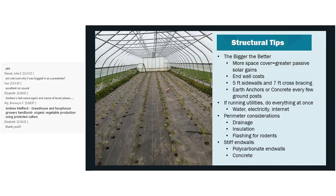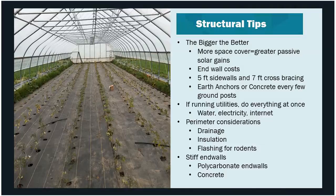The first structural tip: bigger is better. Larger structures provide greater passive solar gains, more microclimate creation capacity, and lower relative end wall costs. For example, a 30-by-96-foot tunnel avoids the cost of two extra end walls compared to two 30-by-48 tunnels covering the same footprint. For fruiting crops trained vertically, aim for at least seven to seven-and-a-half feet from the beds to the truss structure, and five-to-six-foot side walls for easier access to outer beds. Gothic and gable structures lend themselves to higher side walls.